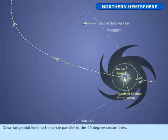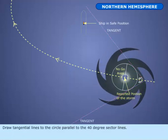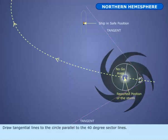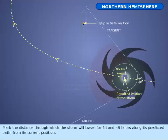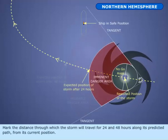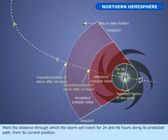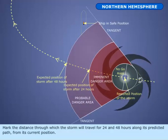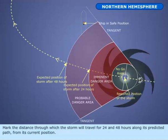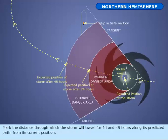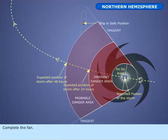Draw tangential lines to the circle parallel to the 40-degree sector lines. Mark the distance through which the storm will travel for 24 and 48 hours along its predicted path from its current position. Complete the Fan.